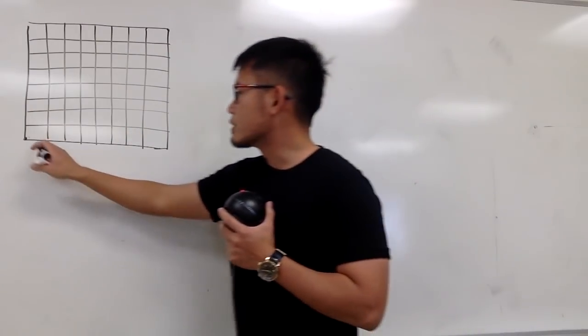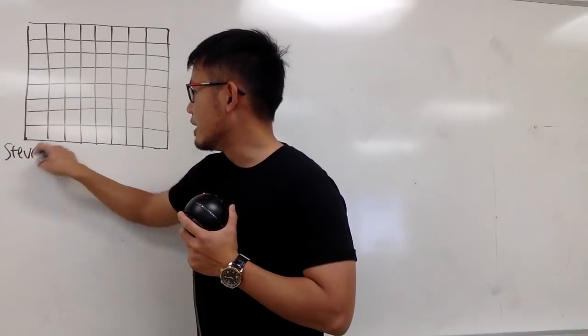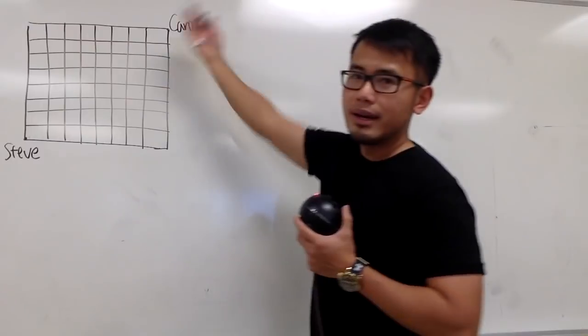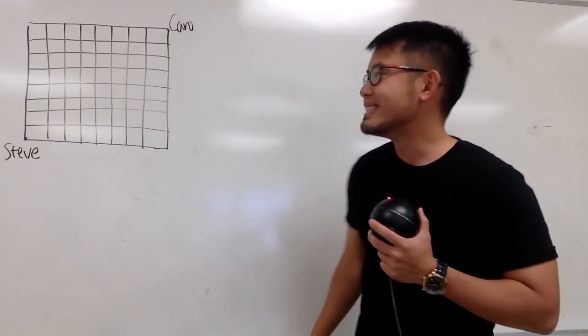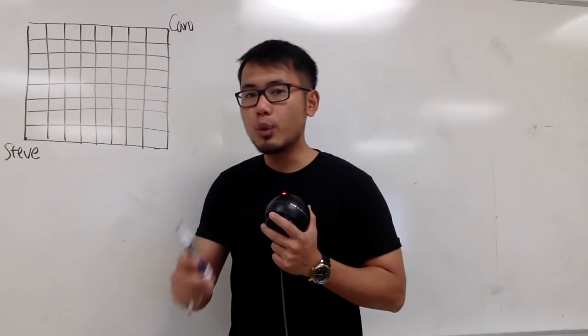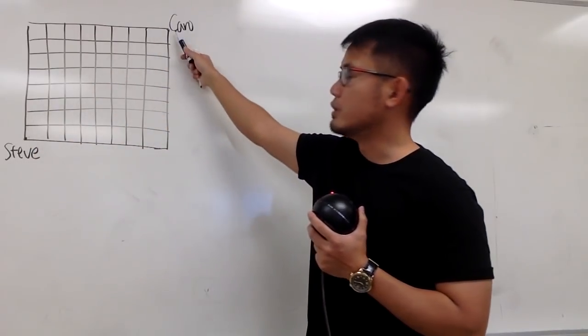And we have two people. I will call the first person Steve, and he is right here. And then I will call the other person, of course, Carol, and she is right there. Steve and Carol, they always go together.